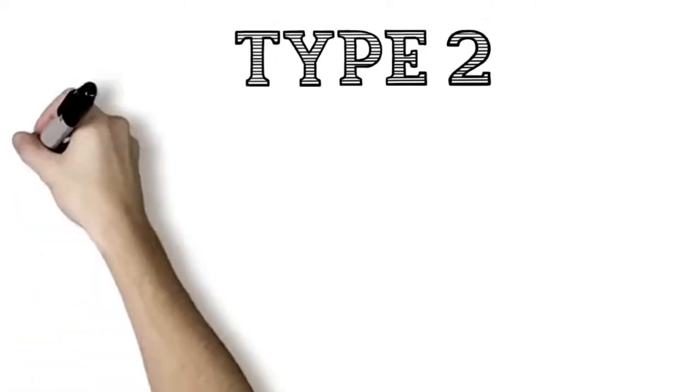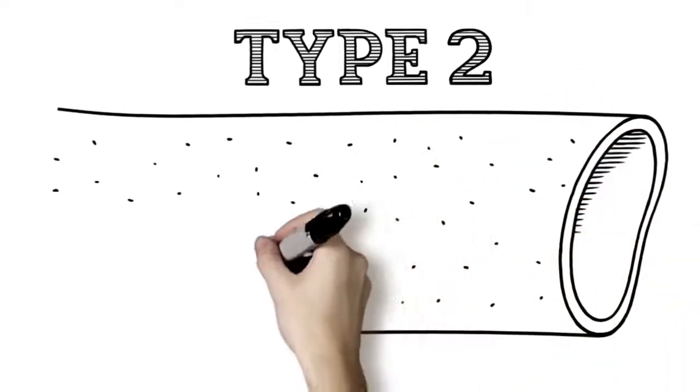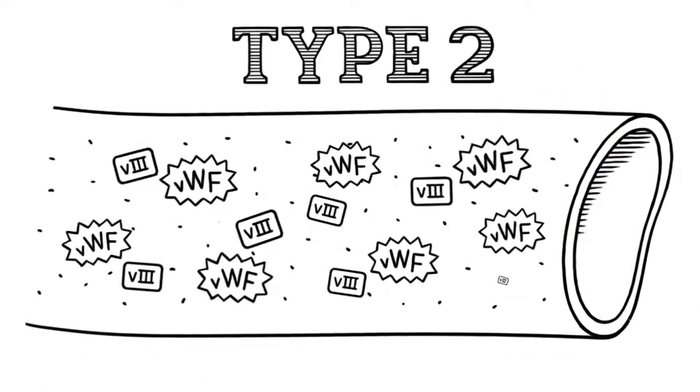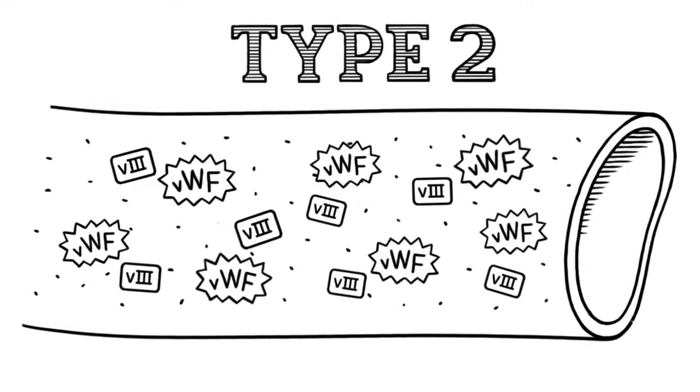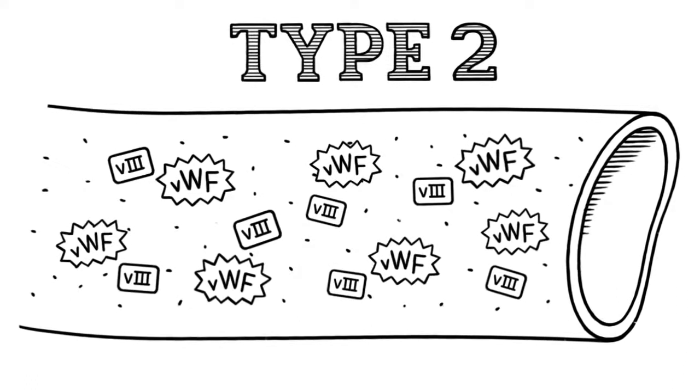In type 2 VWD, the body makes normal amounts of Von Willebrand factor, but it does not work the way it should. There are four different subtypes of type 2 VWD.